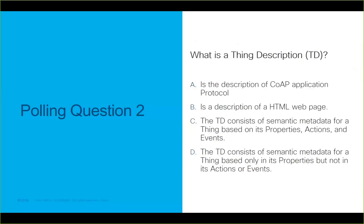Here is the second polling question. What is the thing description for you? First: it's a description of the CoAP application protocol. Second: a description of an HTML web page. Third: the thing description consists of semantic metadata for a thing based on its properties, actions, and events. Or fourth: the thing description consists of semantic metadata for a thing based only on its properties, but not actions or events.